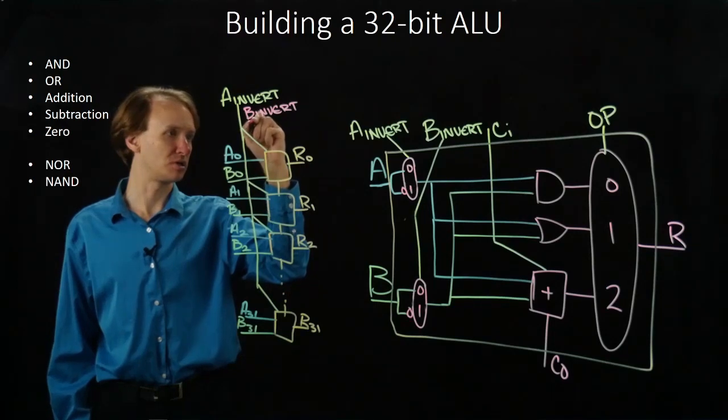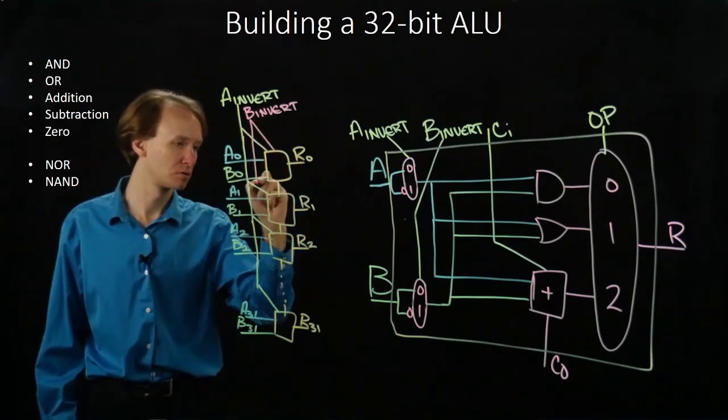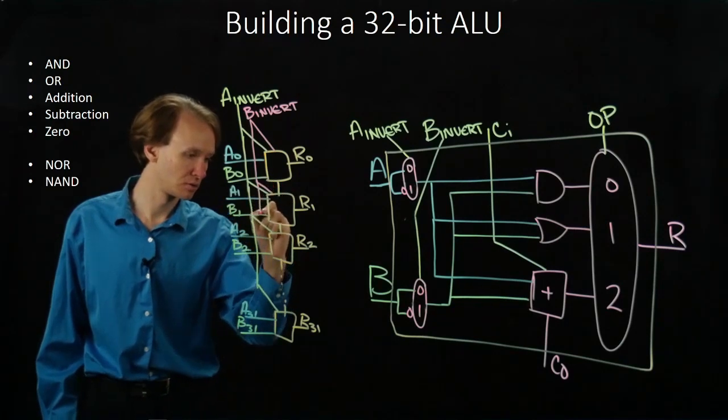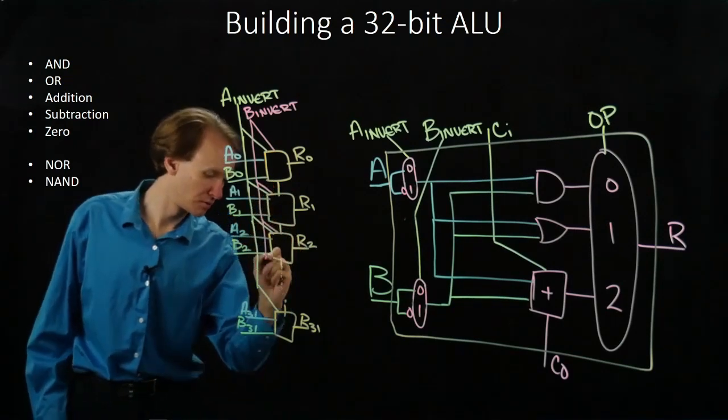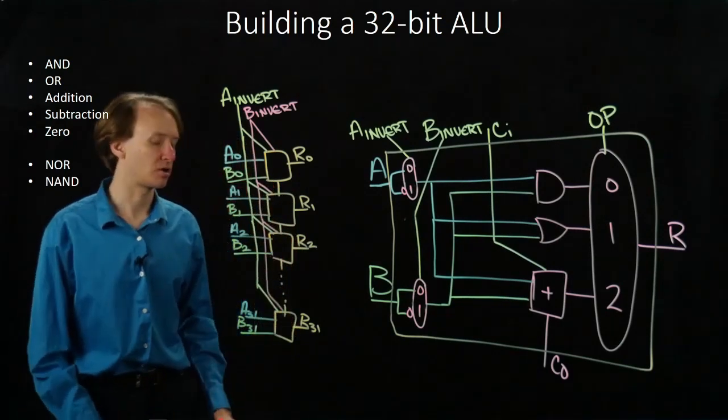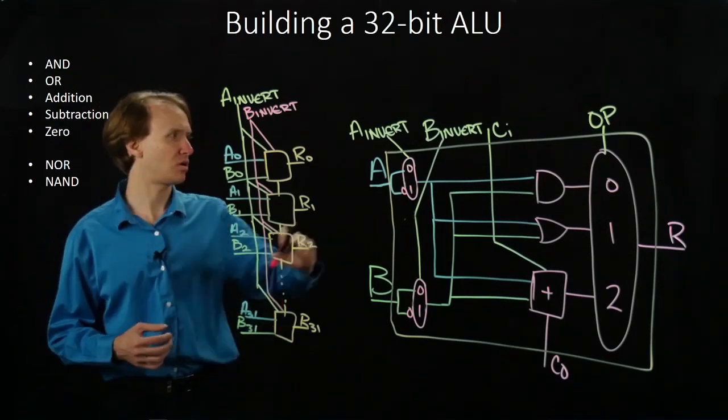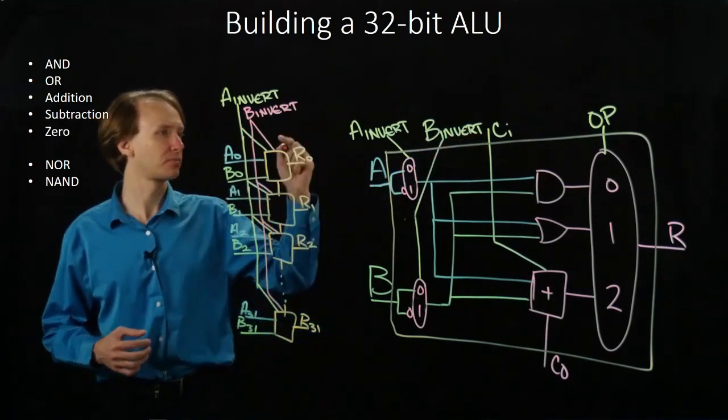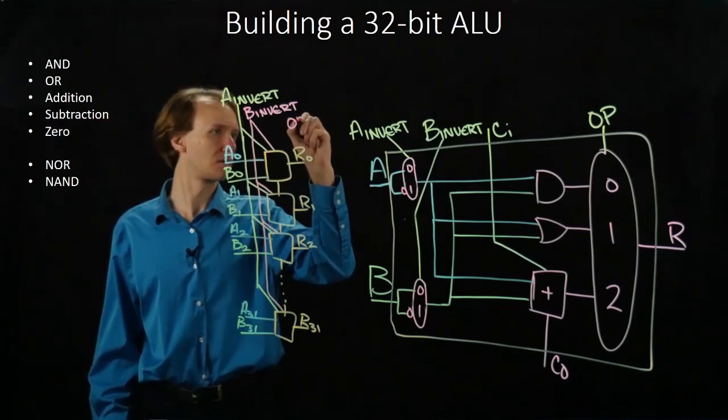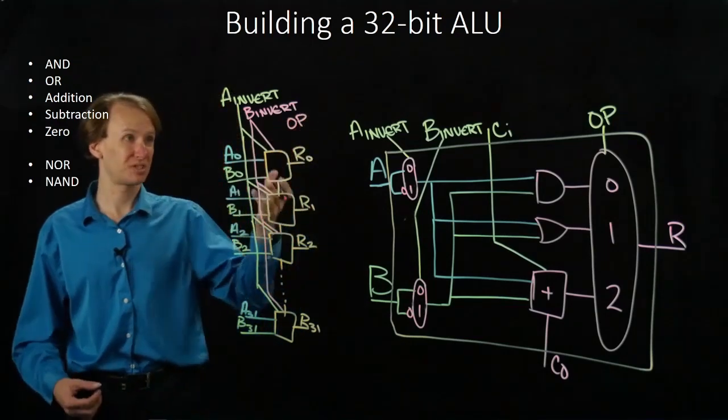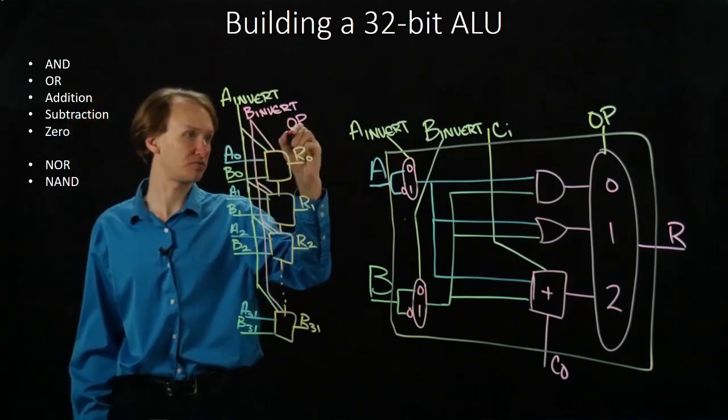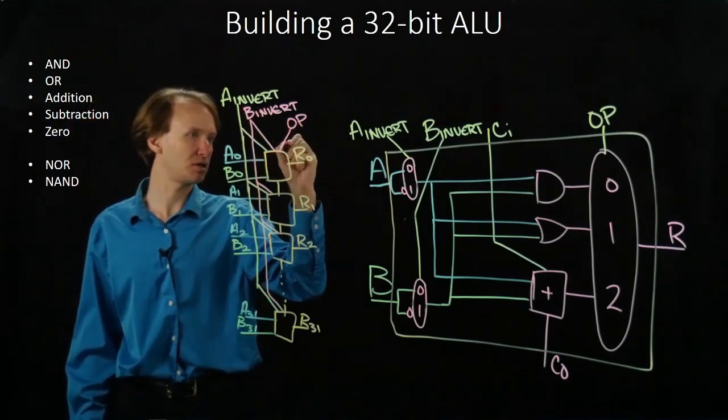I will do the same thing for my B invert. So now I can invert A or B as I want. Next, I'll add in the operation. That will work the same way as the others. We really want to just feed that into each of these.